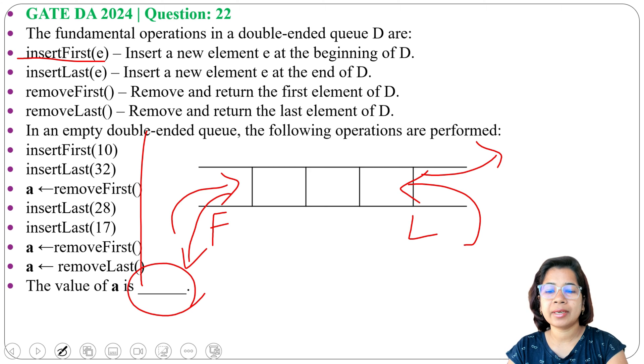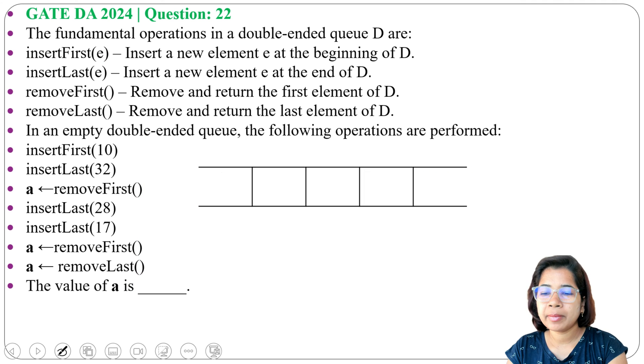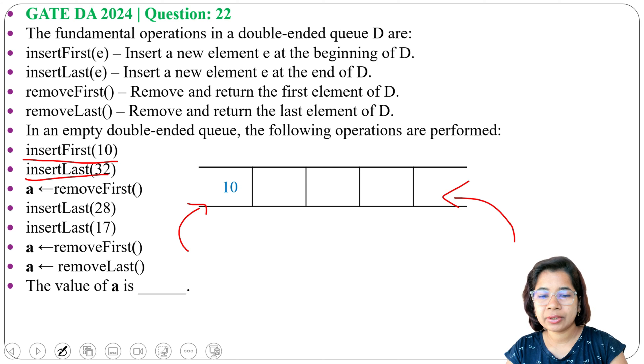Let's do one by one operation. First operation: insertFirst(10), so we will insert 10 at first. Then insertLast(32), so insert 32 at last side. This is our first, this is last. Next, a ← removeFirst, so we will remove this 10. After removal, now a contains 10.